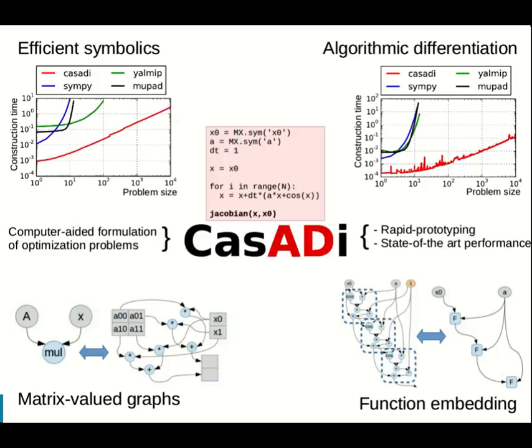Four ingredients make this possible: efficient symbolics, algorithmic differentiation, matrix-valued graphs, and function embedding.